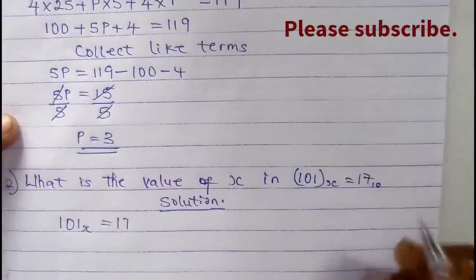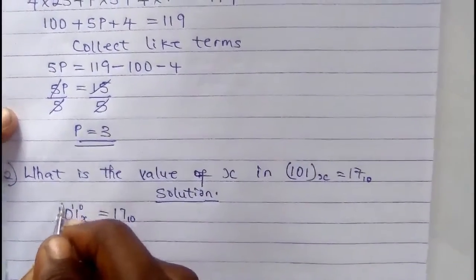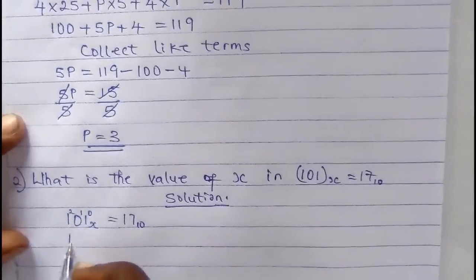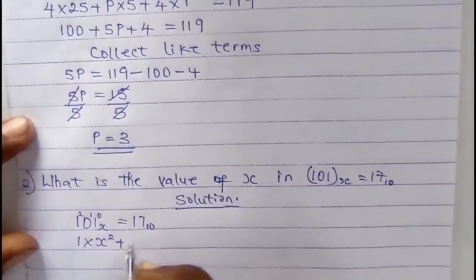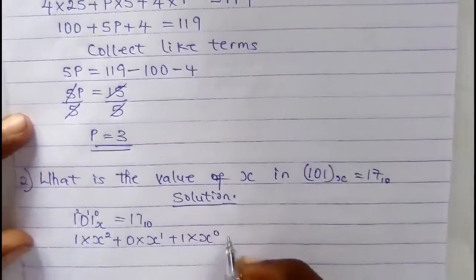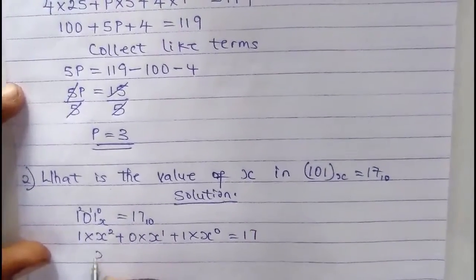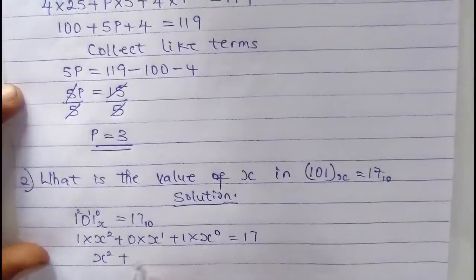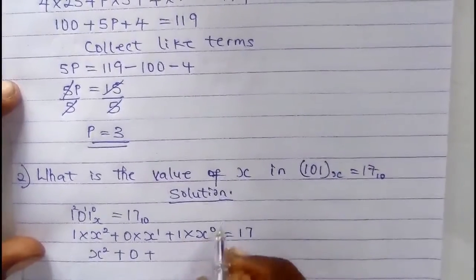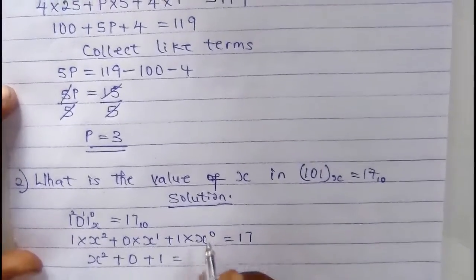The digit positions are: rightmost is 0, middle is 1, leftmost is 2. We don't need to convert the right side. We are converting from base S to base 10. So: 1 times S to the power of 2, plus 0 times S to the power of 1, plus 1 times S to the power of 0, equals 17. This gives: S squared, plus 0, plus 1 — because anything to the power of 0 equals 1.